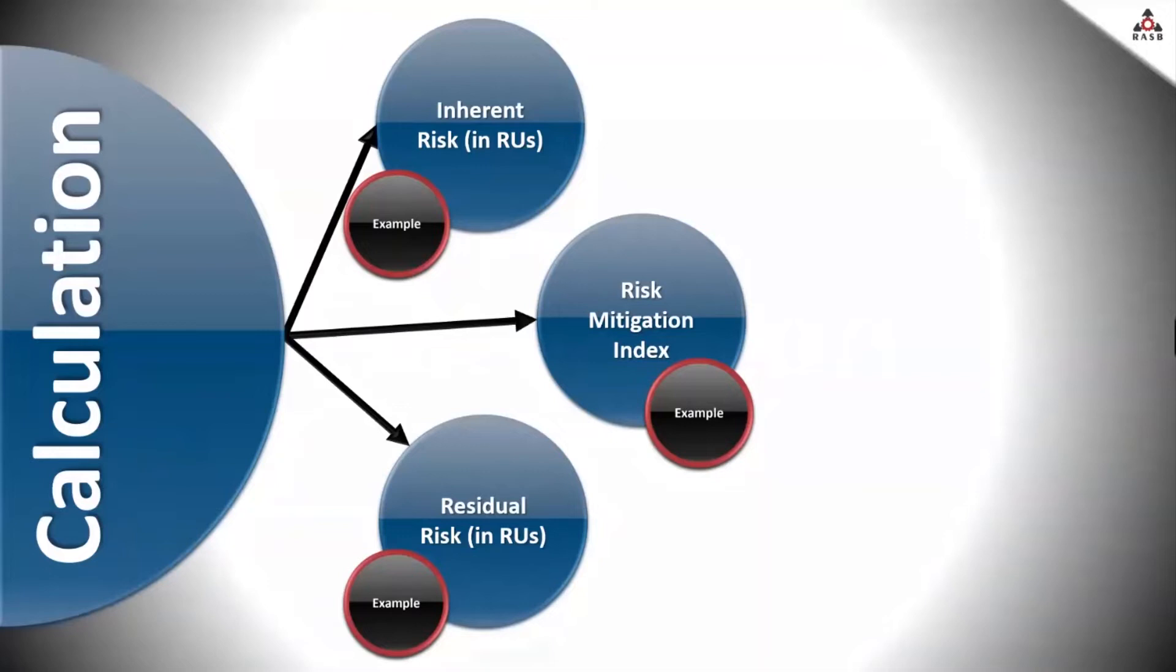The inherent risk is expressed in risk units and represents the amount of risk exposure accepted by the enterprise before considering the effects of the internal risk mitigation activities and processes. In short, it basically represents the maximum exposure to non-financial risk.